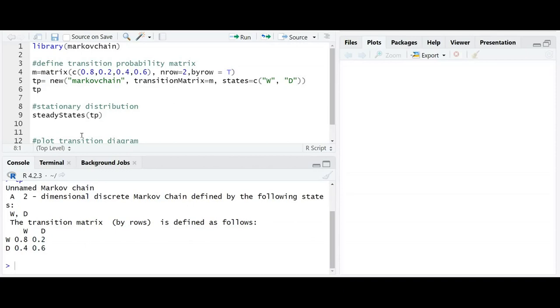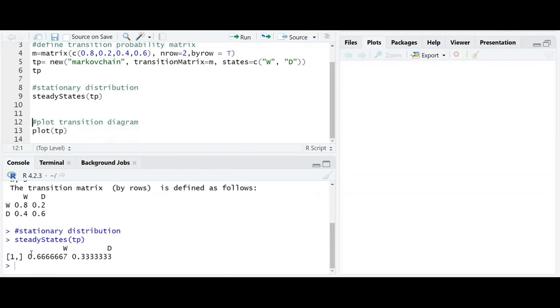Now we have to calculate the proportion of wet day for long run. For this we write steady state and then tp. Now we have for long run, the proportion of wet days will be 0.6667 and for proportion of dry day will be 0.333.